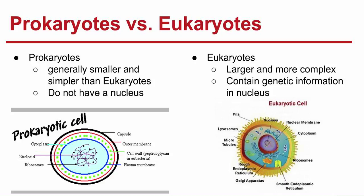Eukaryotes are generally larger and more complex than prokaryotes. Eukaryotic cells do contain a nucleus in which their genetic information is separated from the rest of the cell. Here we can see the nucleus, which is where all the genetic information is stored in the form of chromatin.